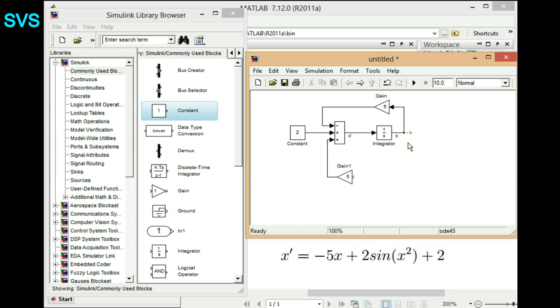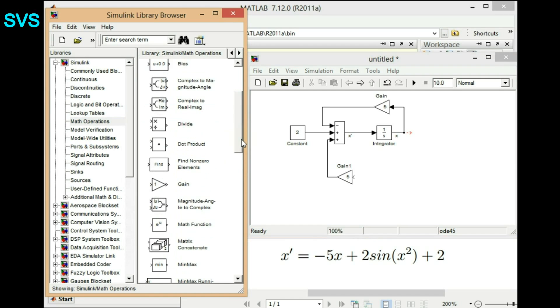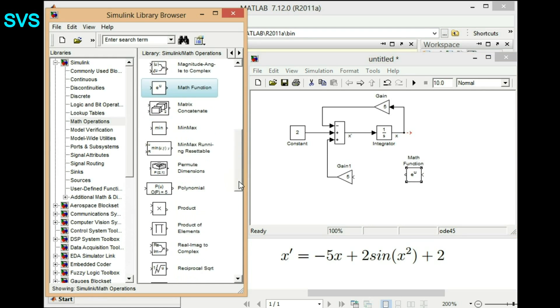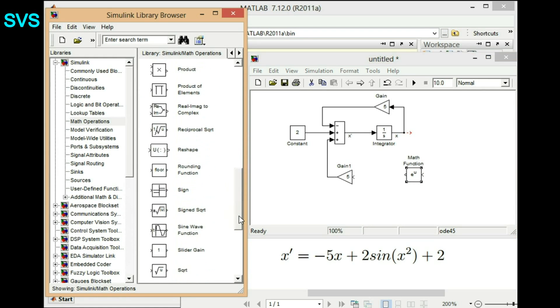So its gain should be 2. And let's search for math operation and we'll require a trigonometric function and a math function. So we'll just go to math function which will provide us x squared. Like whatever value we give in, it will just square it. We'll rotate it and then we'll go to trigonometric functions.